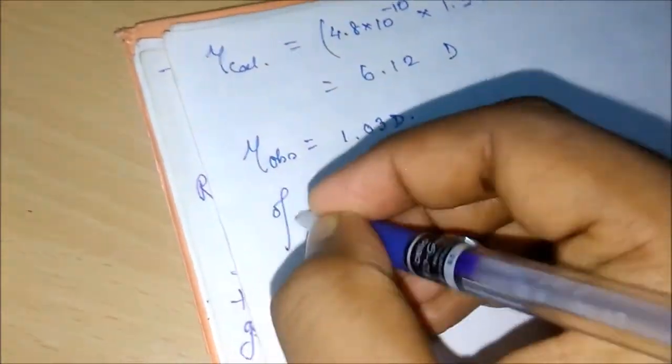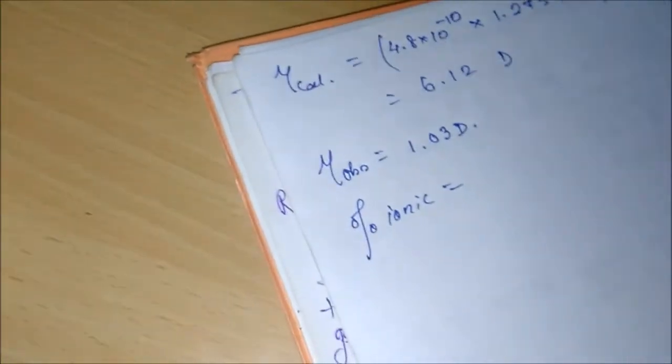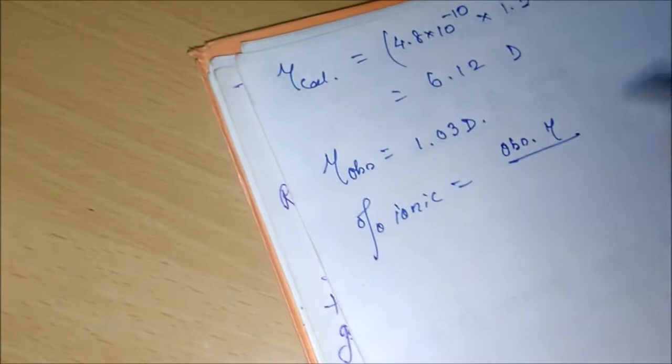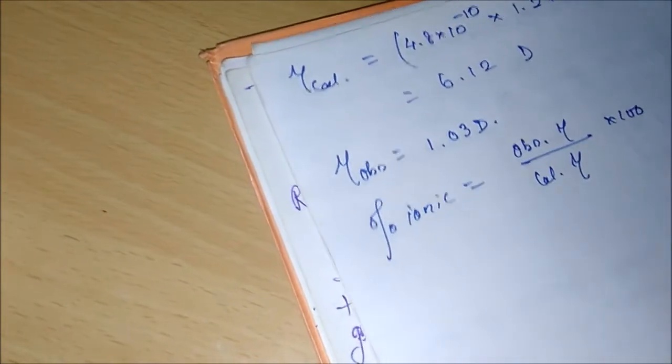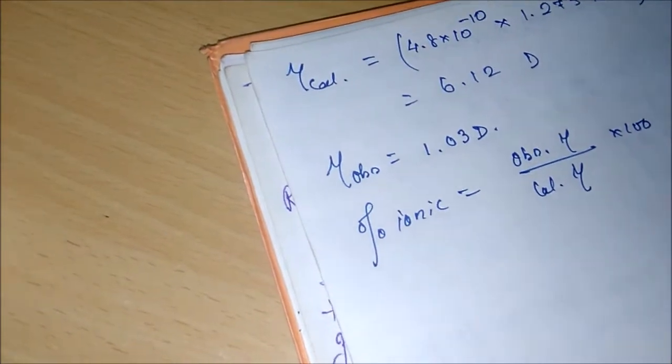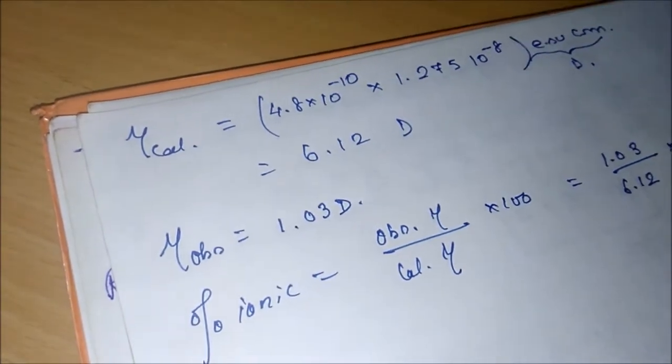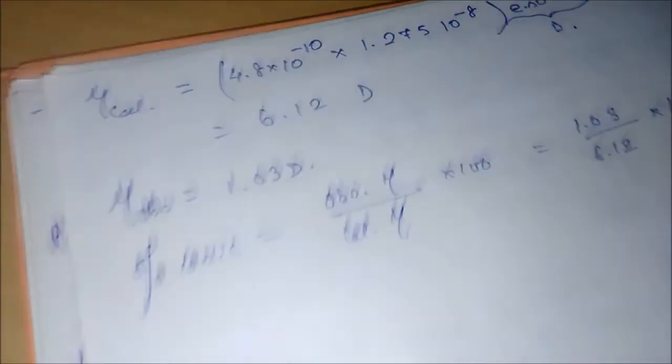All right, now the question is percentage ionic, which will be equal to observed μ divided by calculated μ × 100. So let us put this out: it is 1.03 divided by 6.12 × 100. Let's calculate it.